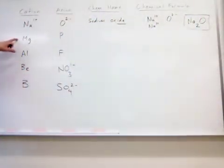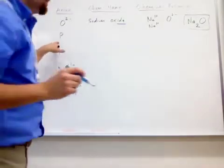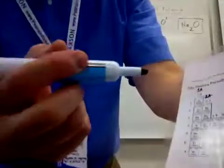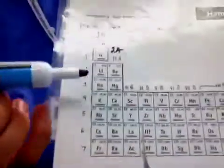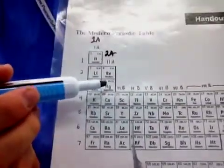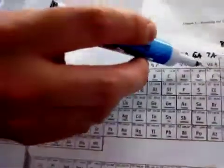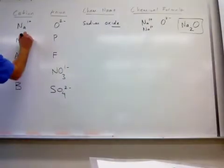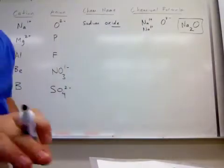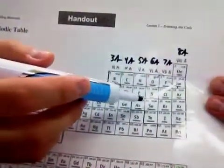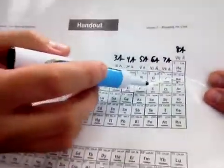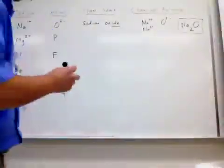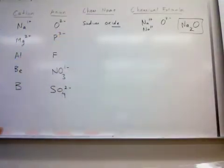Next one: magnesium and phosphorus. Magnesium is right here on the periodic table — it's in group two. It's going to lose two electrons to be like neon, so it's got a positive two charge. Phosphorus is right here — it's going to gain three electrons to be like argon, so it's going to have a negative three charge.